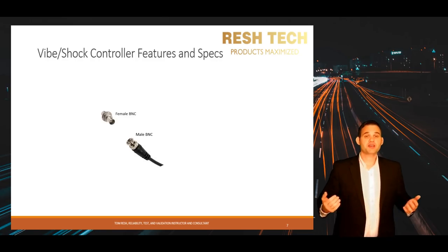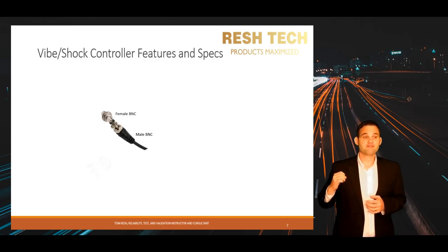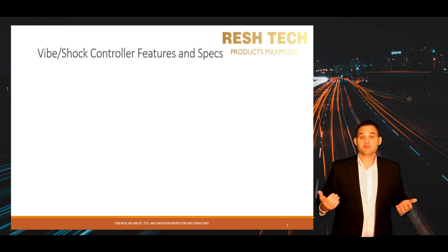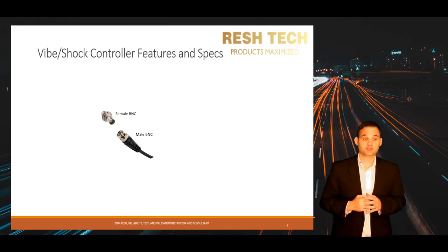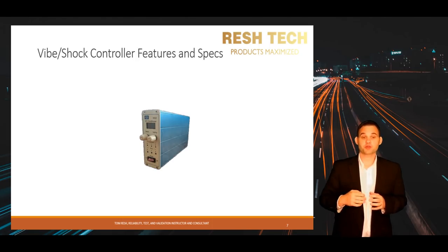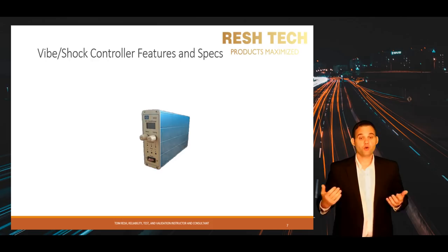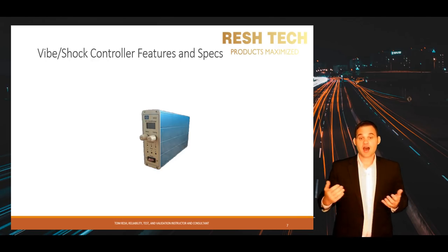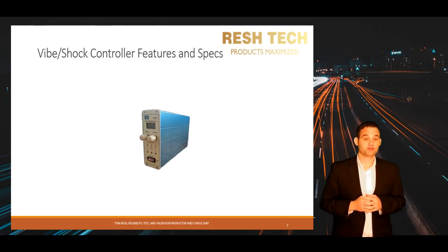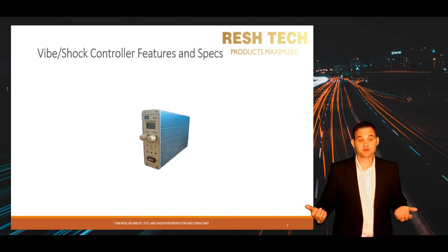The accelerometer inputs on a vibration controller usually have a female BNC. You can purchase accelerometer cables with a BNC male connector on one end, or purchase an adapter that goes from 10-32 accelerometer connectors to male BNC. Most current vibe controllers have a built-in integrated circuit piezoelectric power supply — or ICP power supply — for voltage mode accelerometers.